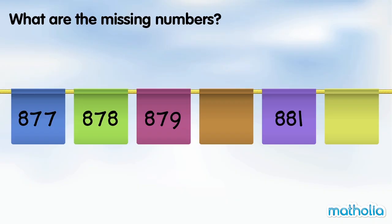What are the missing numbers? 877 plus 1 is 878. 878 plus 1 is 879. In each step the numbers go up by 1.